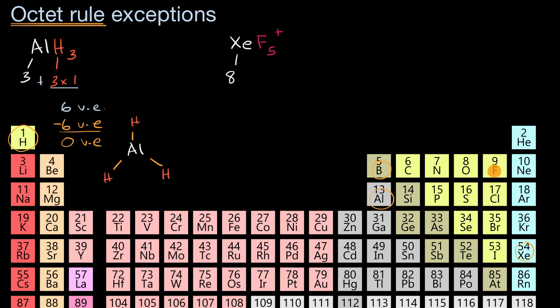And then fluorine, we've seen this multiple times, has one, two, three, four, five, six, seven valence electrons. But there's five of them, so five times seven - I'm gonna be drawing a lot of electrons in this - gives us a total of eight plus 35, which is 43 valence electrons.